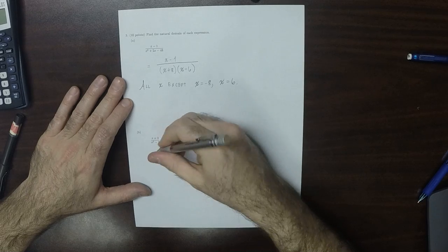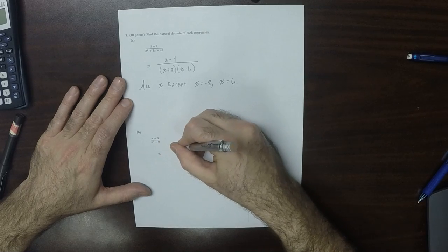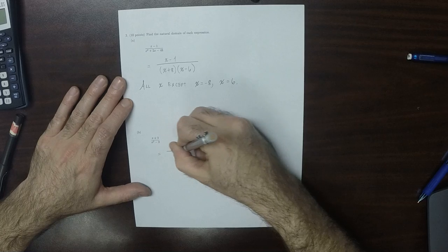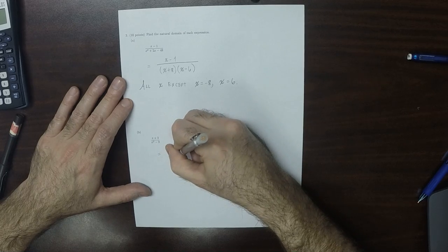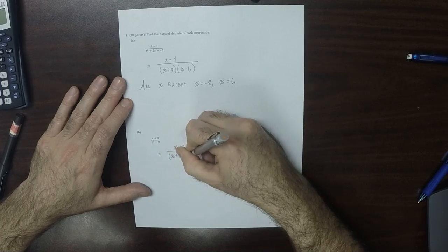This we need to factor. So in the numerator, x plus 3. And in the denominator, x plus 3 multiplied by x minus 3.